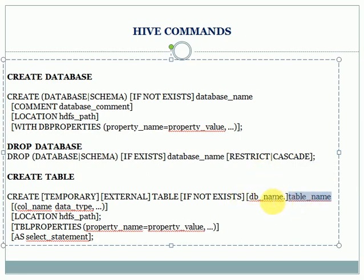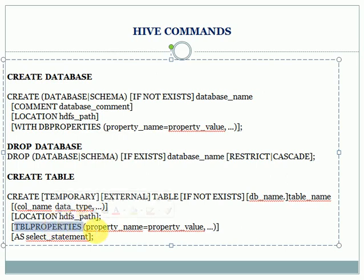You can also create an external table using the CREATE EXTERNAL TABLE keyword. Use IF NOT EXISTS and specify the database name dot table name — it's better to specify the database name when creating a table, especially if you have multiple databases with the same table name. Then you specify column names and data types, along with additional parameters like LOCATION for the HDFS path, and TBLPROPERTIES where you can enable properties such as ACID transactions for INSERT, UPDATE, and DELETE, or skip header rows.